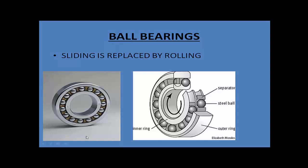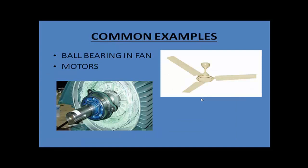The image of the ball bearing is shown on the slide. A ball bearing has two rings — an outer ring and an inner ring. Between the outer ring and the inner ring there are many steel balls separated by components called separators. Both rings move, and the steel balls and separators keep them apart. Ball bearings are used in many equipments — for example, in ceiling fans and motors — making our job very easy.